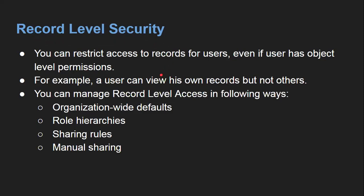Next is record level security. Even if you have object level access and access to certain fields, record level security still applies. If you have both object level and field level permissions but do not have record level access, you will not be able to view the records. For example, a user can view their own records but not others. You may have view permission on an object and field level permissions, but at the record level you may only be permitted to view records owned by you.